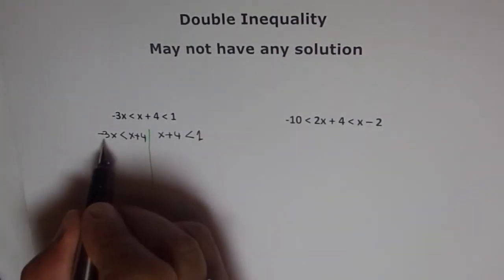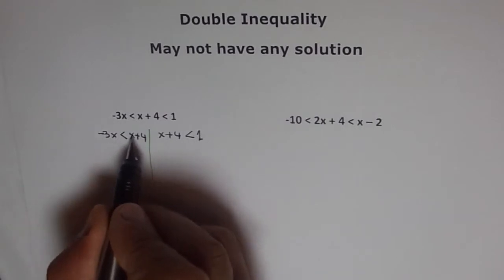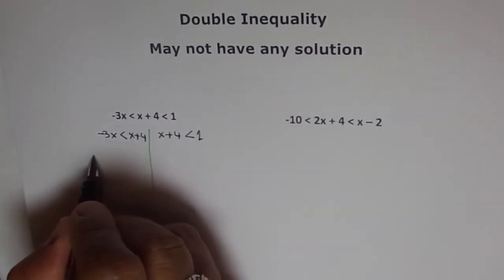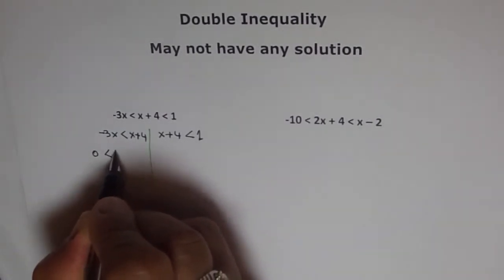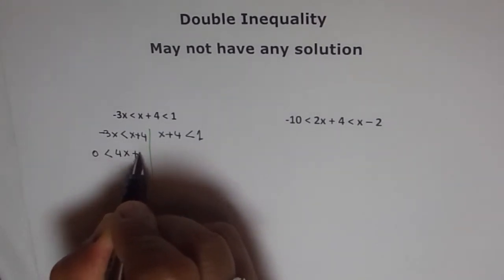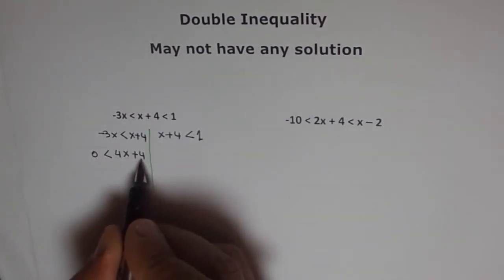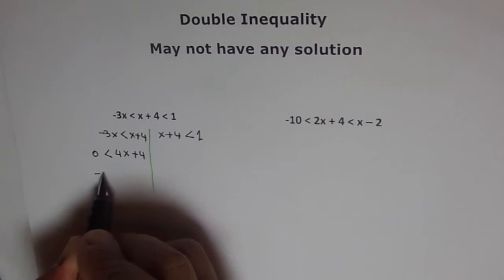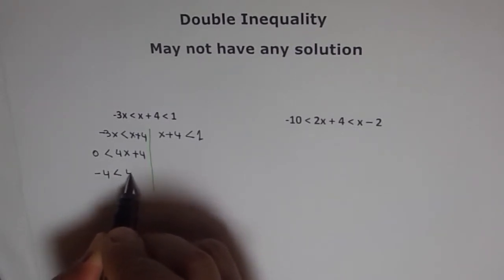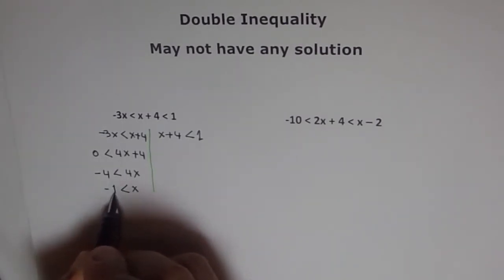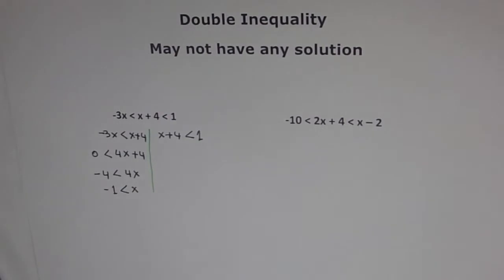So if you solve for this, let's take this minus 3x on this side and say 0 is less than 4x plus 4. And now we can take 4 on this side. So we say minus 4 is less than 4x or x is greater than minus 4 divided by 4 is minus 1.